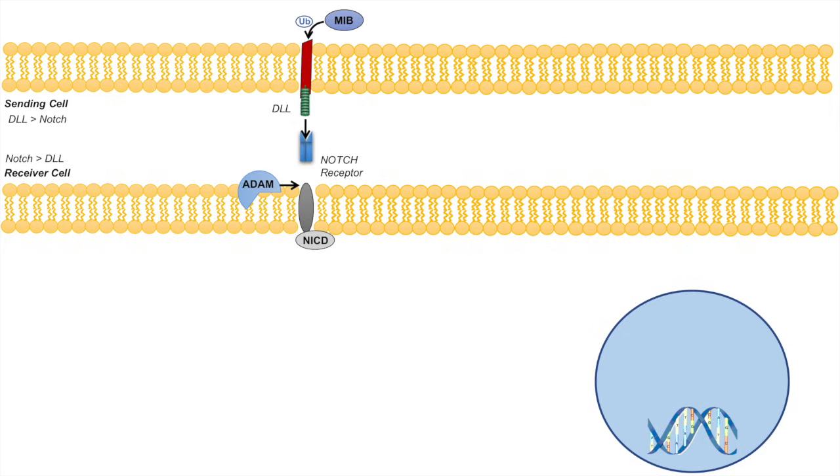Once this happens, there's another protease known as secretase gamma, which cleaves the notch intracellular domain or NICD off of the transmembrane portion of the notch receptor. This cleavage process is known as S3 cleavage.